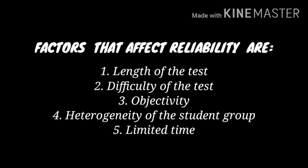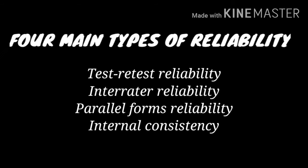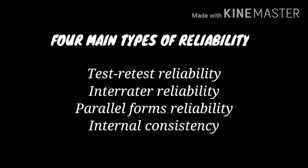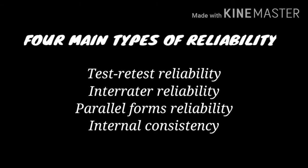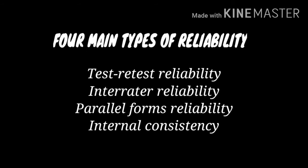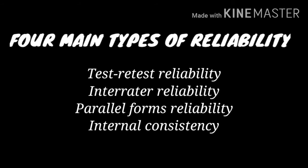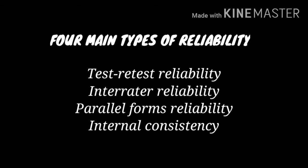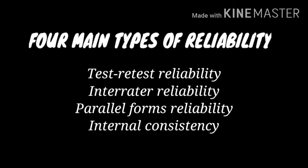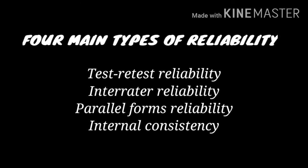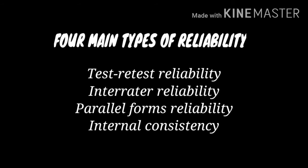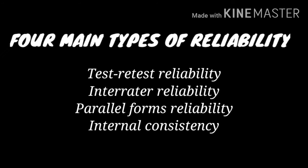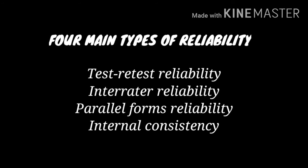The four main types of reliability are: first, test-retest reliability; second, interrater reliability; third, parallel forms reliability; and fourth, internal consistency.